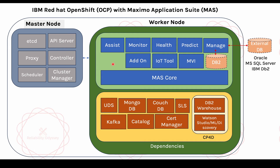Once you have MAS Core, you can add different applications as per your need. Assist provides remote assistance and AR/VR-related assistance for technicians. Monitor is used for monitoring assets — if you have smart assets or sensors and want to do asset performance management, you can use Monitor. Maximo Health provides the ability for reliability engineers to see the health of assets, calculate health scores, and identify assets needing attention. Maximo Predict provides prediction capability to find out when a failure is going to happen — you can find RUL, MRR, and multiple other capabilities.